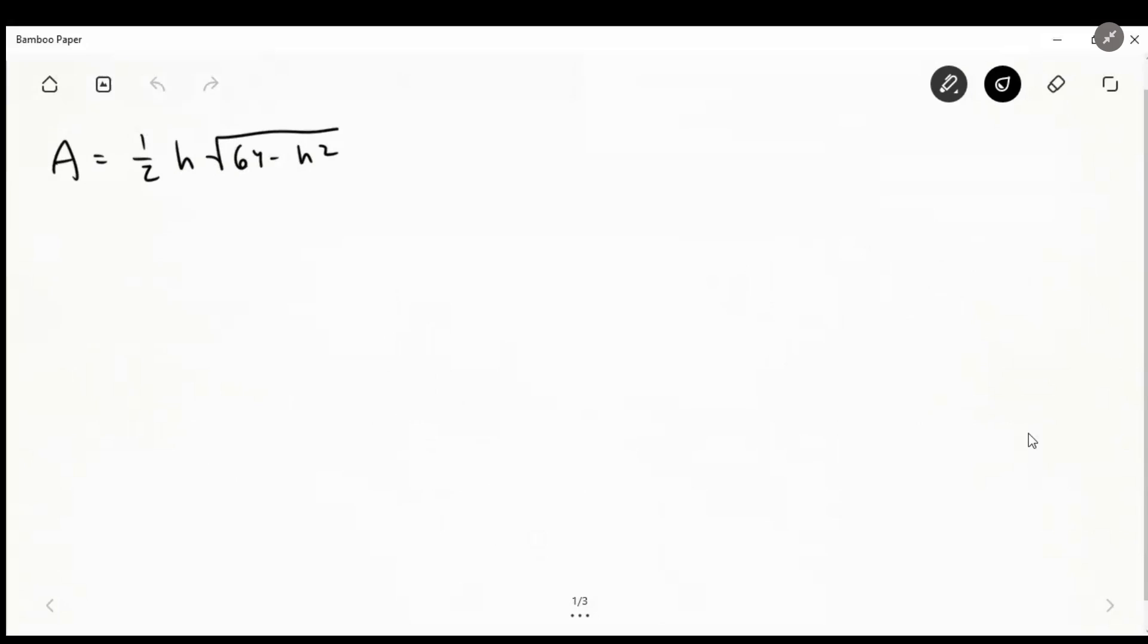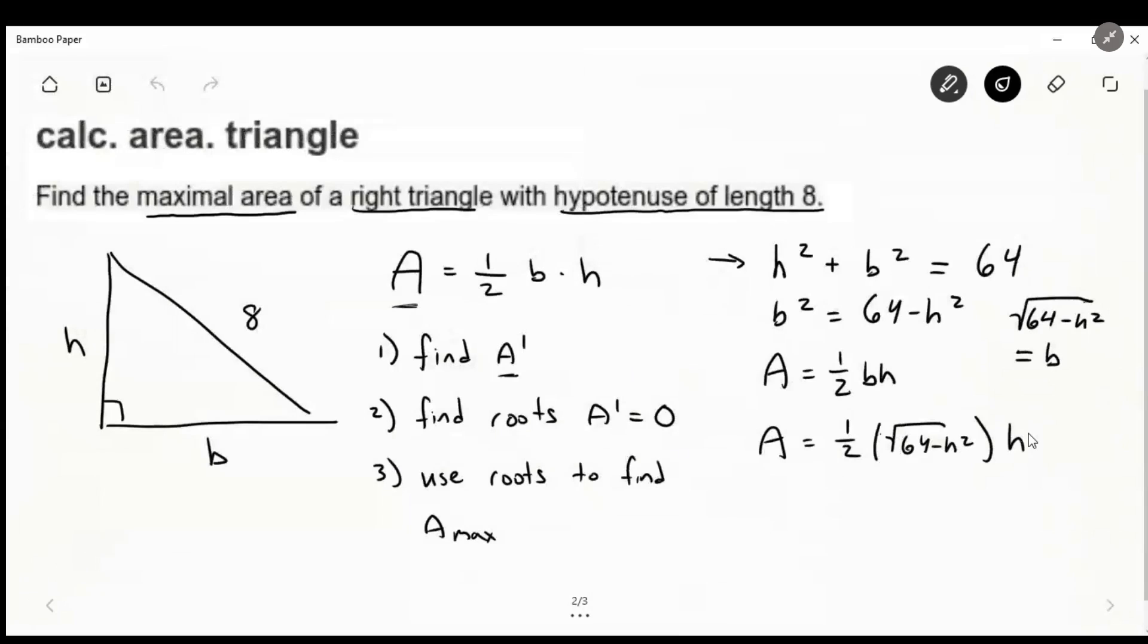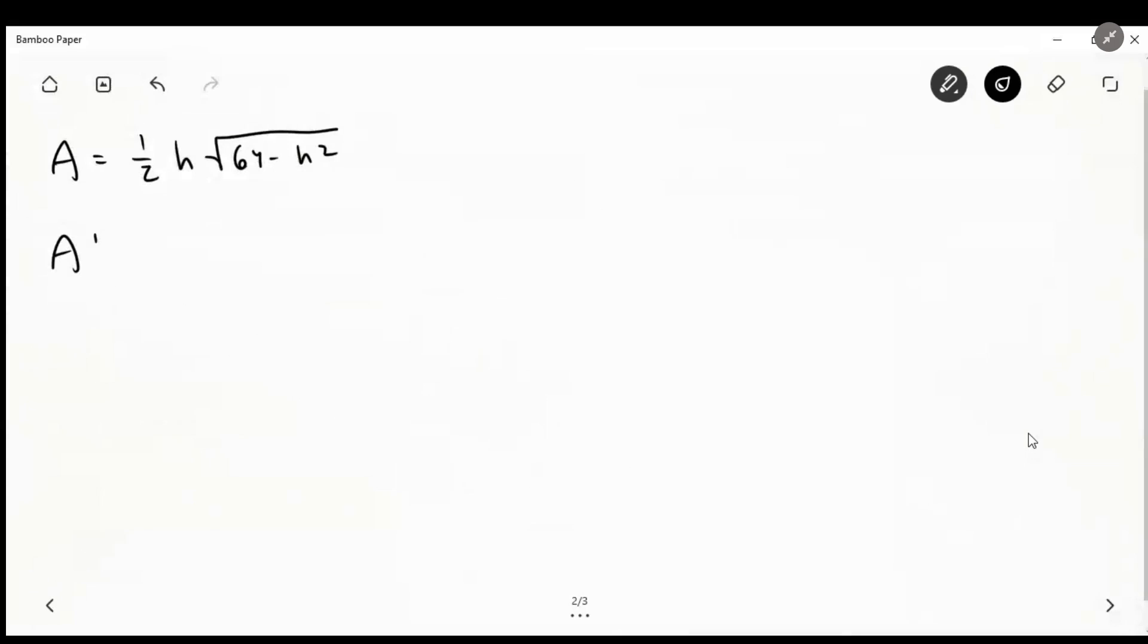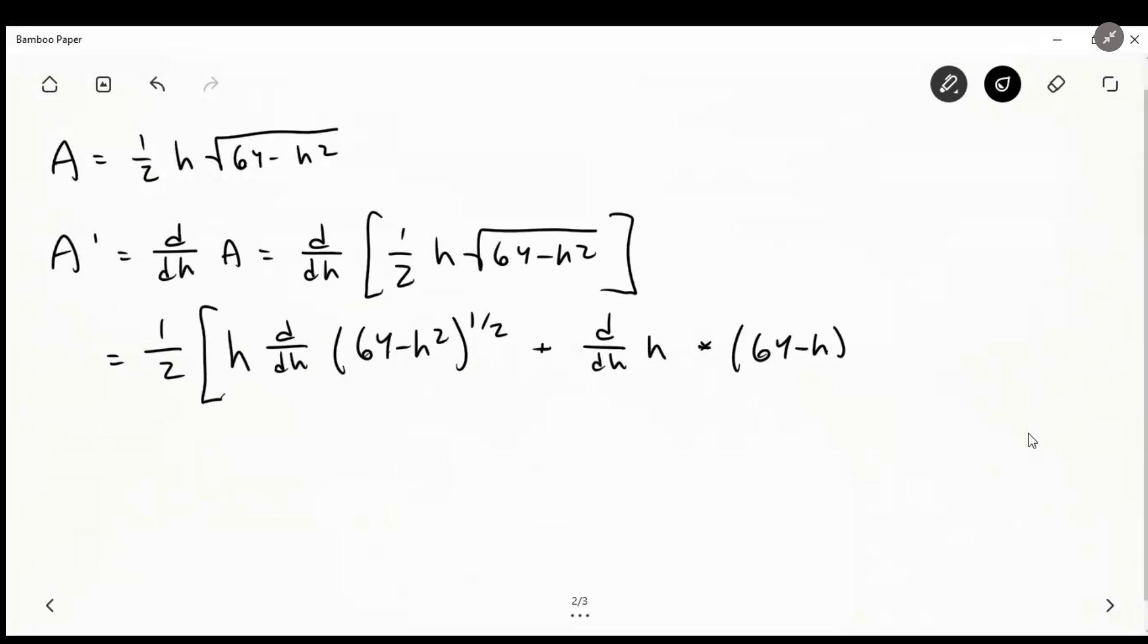And we're going to remember step two back here, we're going to find a prime, and then we're going to find the roots of a prime. So a prime we'll define as d dh of a, or d dh of one-half h, 64 minus h squared. We can bring one-half to the outside, and then we have h times radical 64 minus h squared, which we know we can use the product rule for that. So we can just write h, d dh, and I'll rewrite this as 64 minus h squared to the one-half, just to make it a little easier maybe. And then d dh, h times our 64 minus h squared to the one-half.